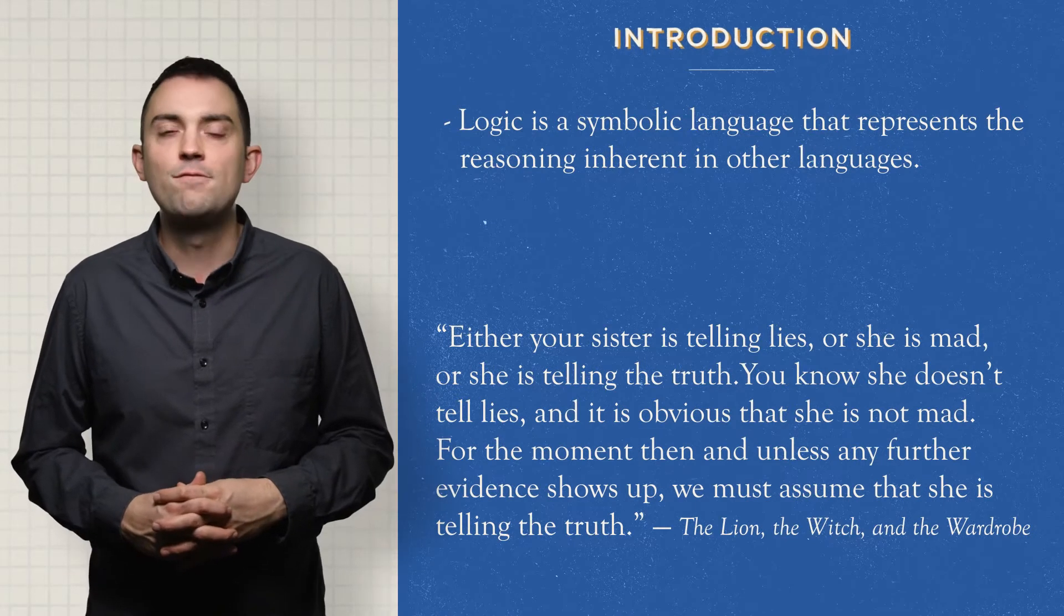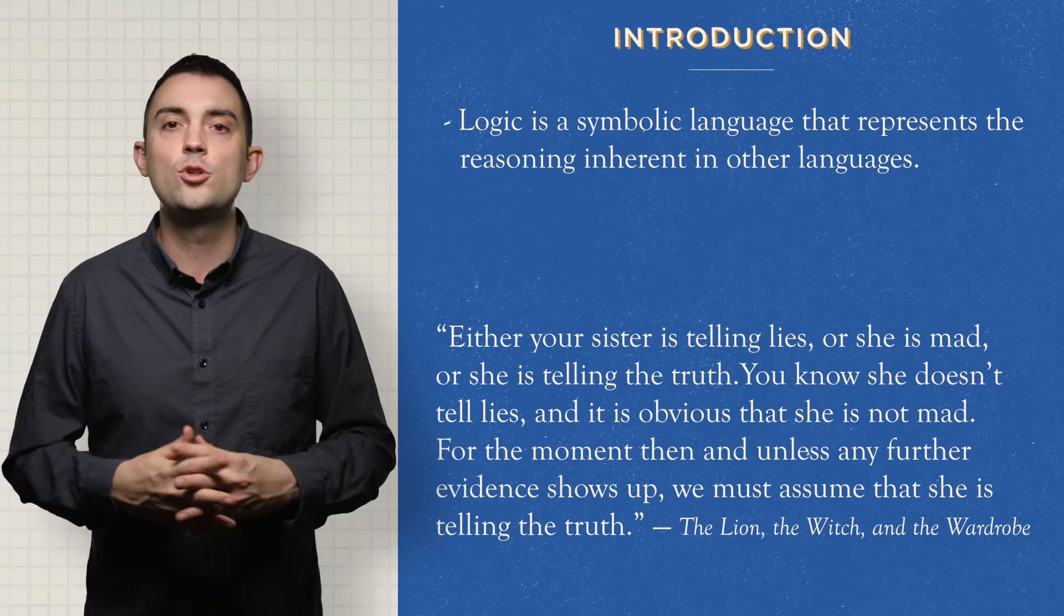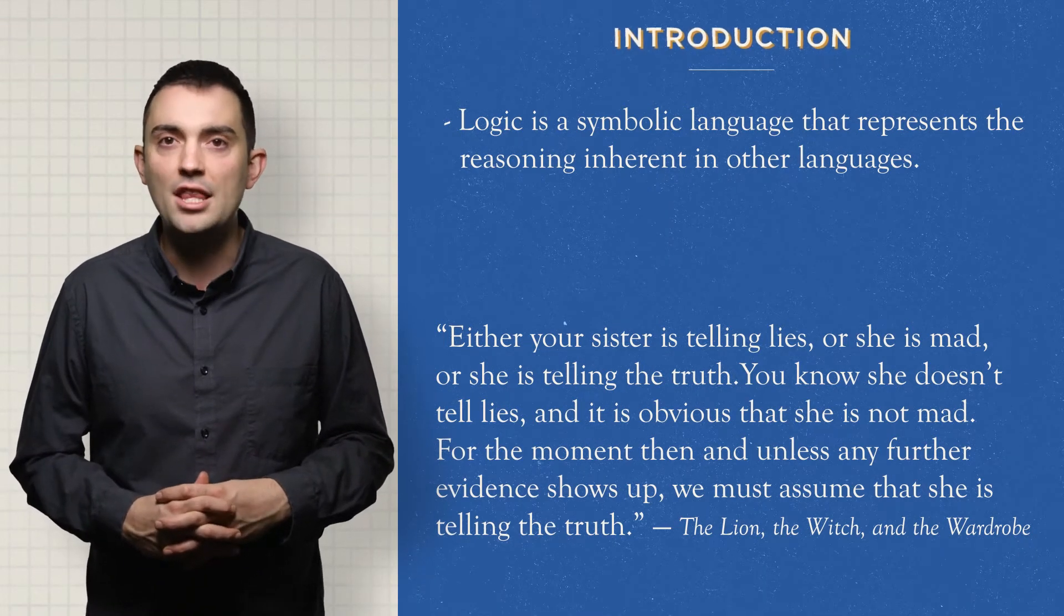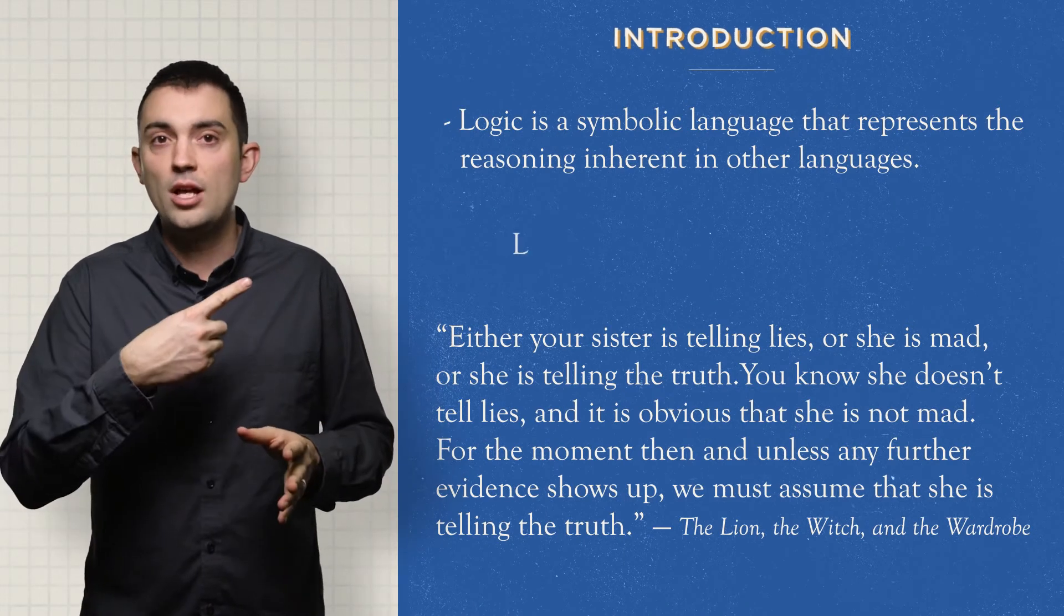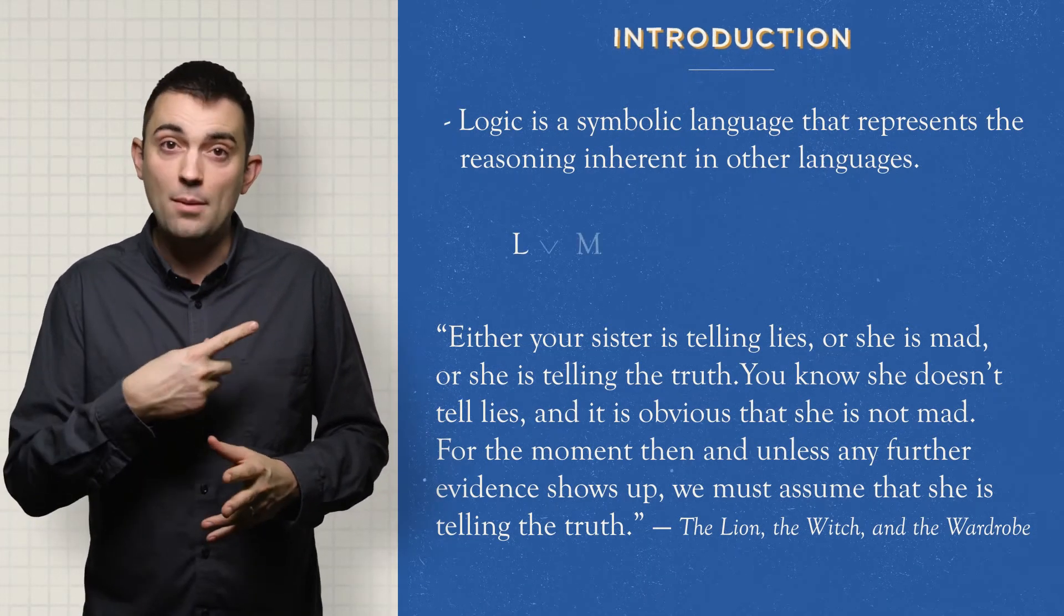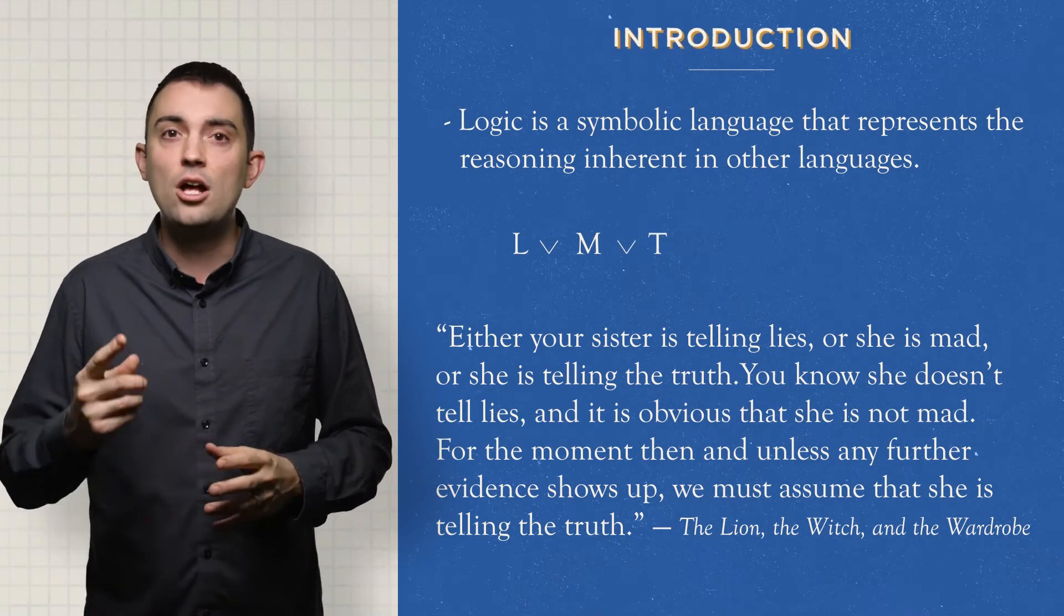So what logic does is take that fully written, fully fleshed out dialogue, strip away a lot of it, and leave you with the bare form of reasoning behind the professor's words. You would represent it this way: Your sister is telling lies, that's the variable L. She is mad, the variable M. She is telling the truth, the variable T. So we write that out as L or M or T.